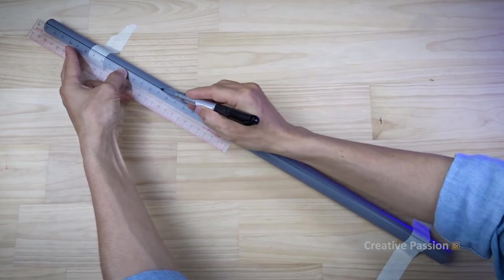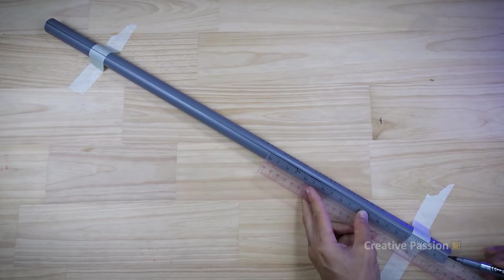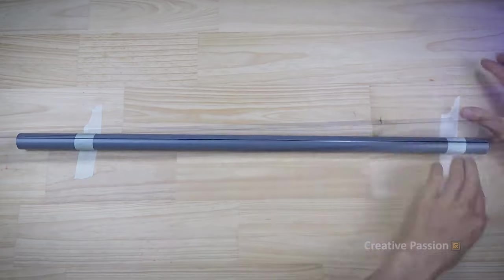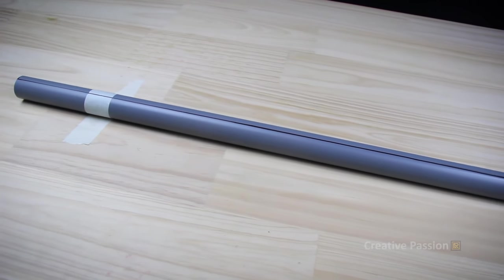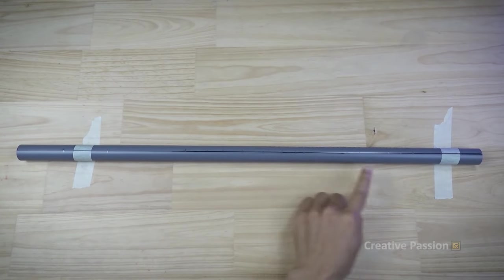Next, we will use a marker pen to draw a straight line on the pipe. Now we will proceed to measure and mark the distances between the holes on the pipe. I'll start measuring from left to right.